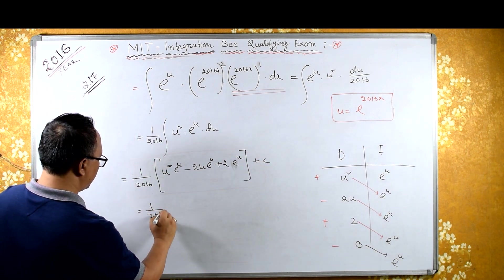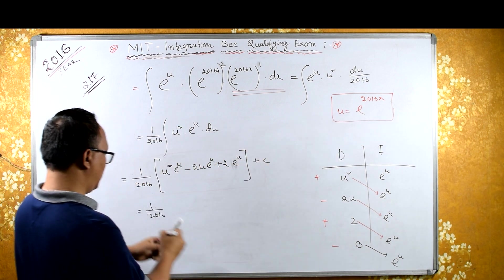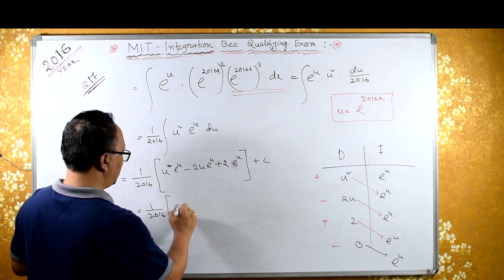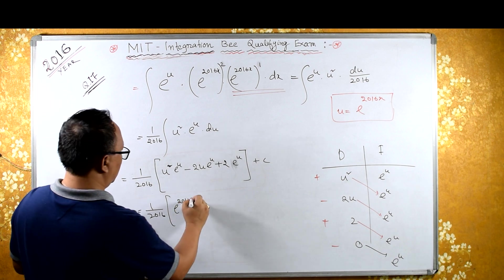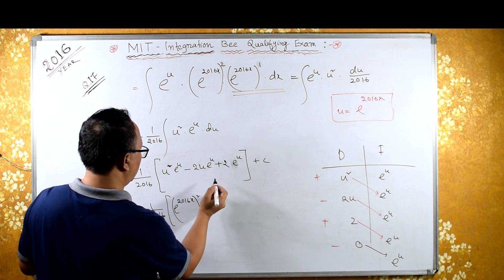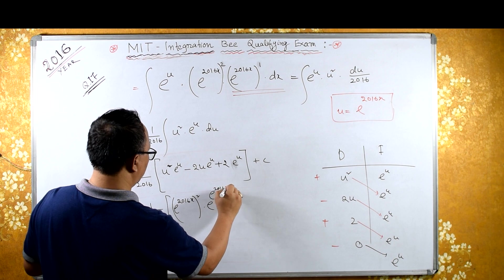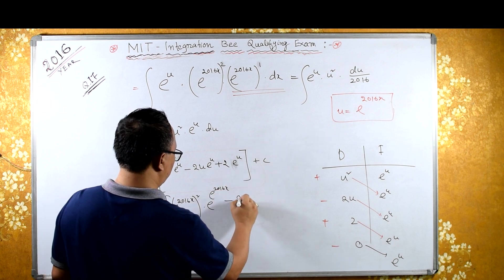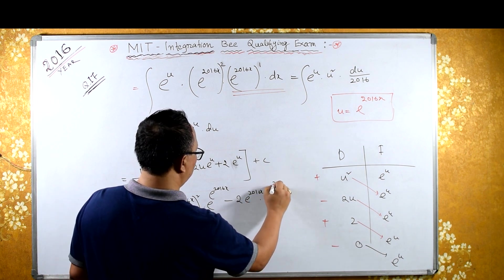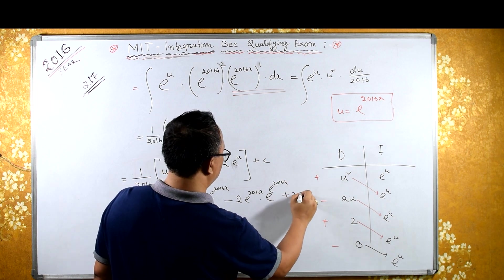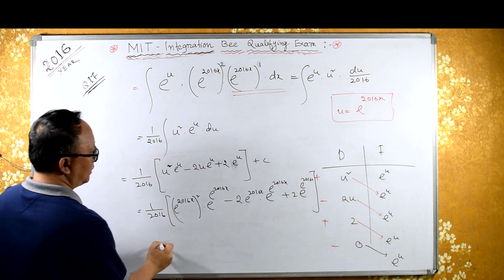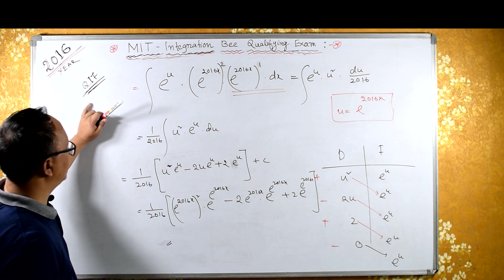Therefore the answer is 1 by 2016, times: e raised to 2016x, raised to square (u squared), into e raised to e raised to 2016x, minus 2 times e raised to 2016x, into e raised to e raised to 2016x, plus 2 times e raised to e raised to 2016x, plus some constant. This is your answer for question number 17.